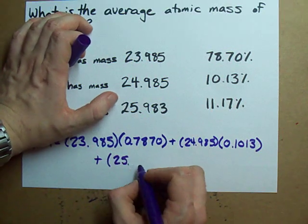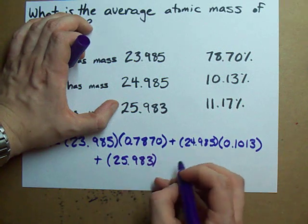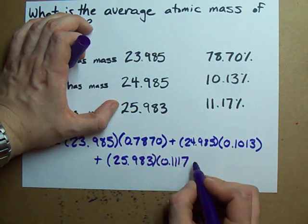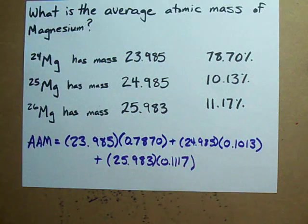Now some atoms have up to like nine stable isotopes, so you may have to do this a bunch of times. I obviously picked a simple example because I could.